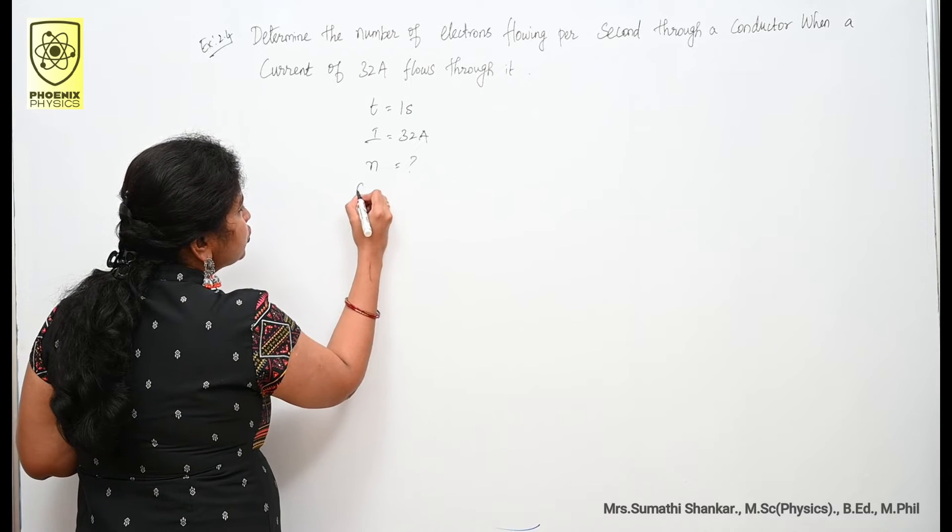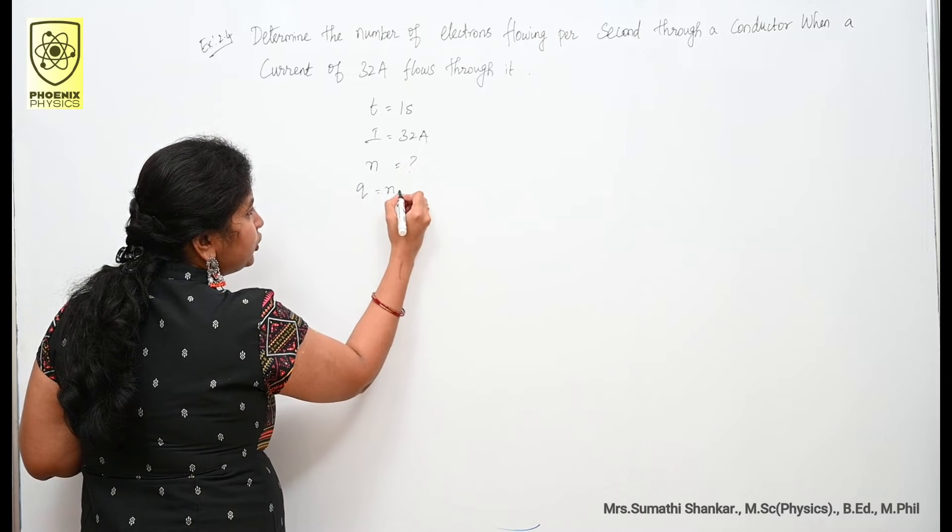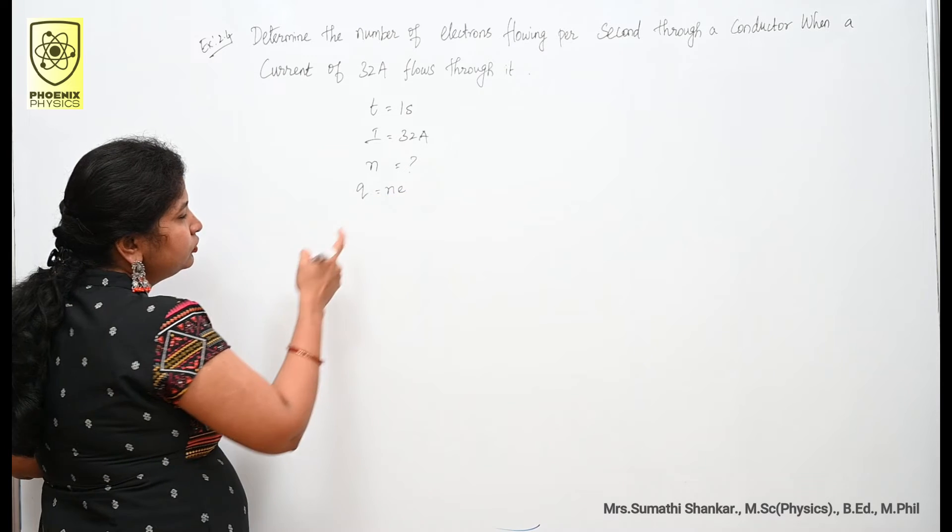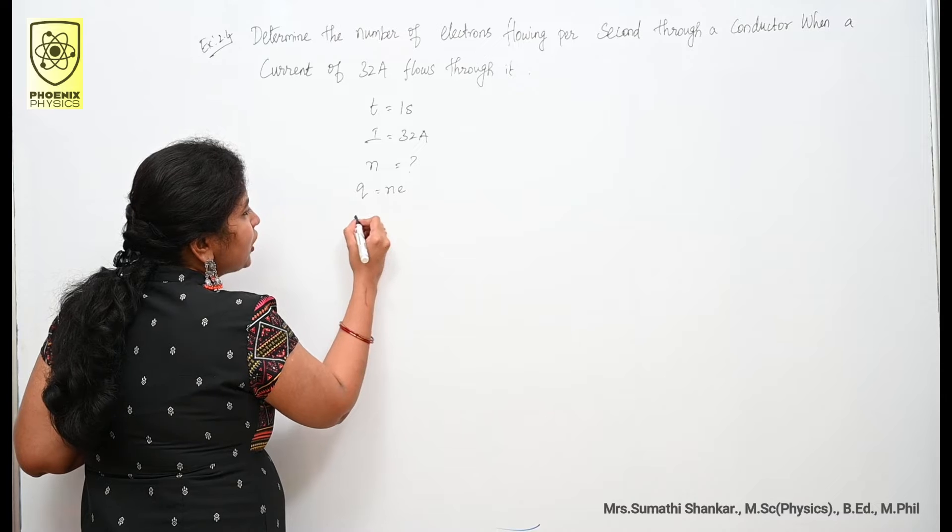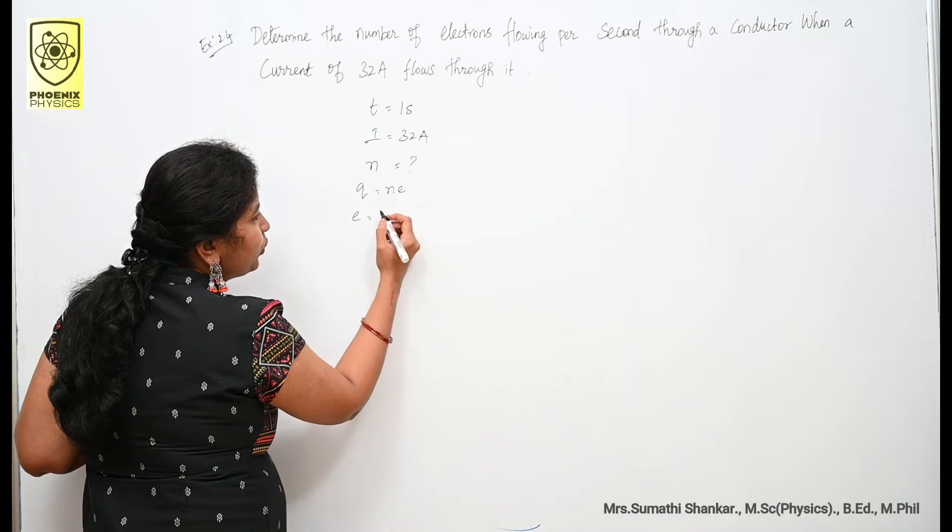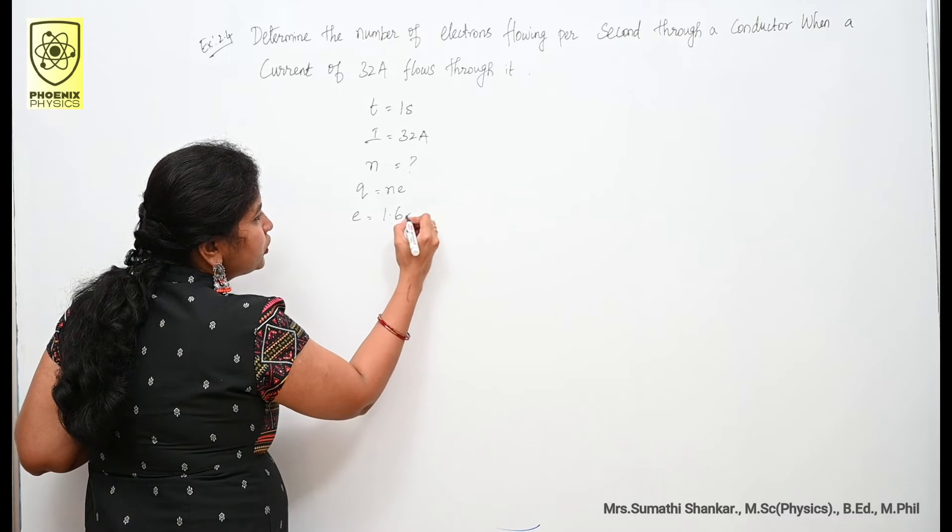You know the general formula, that is Q is equal to n into e. What is this n? n is number of electrons. What is this e? e is charge of the electron, that is e is equal to 1.6 into 10 to the power of minus 19 coulomb.